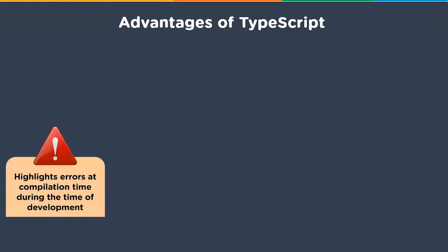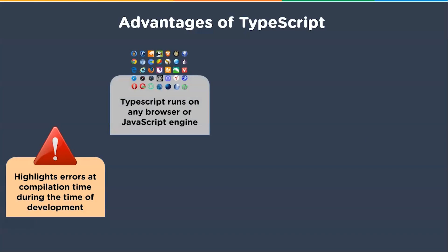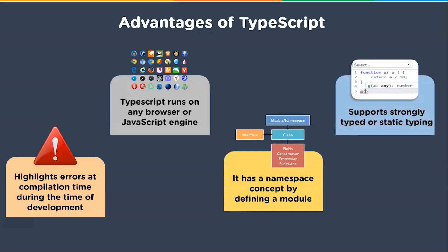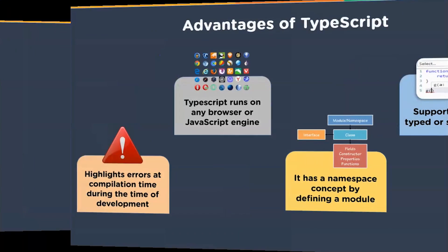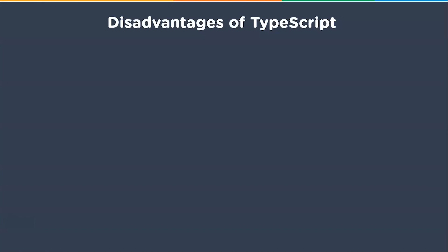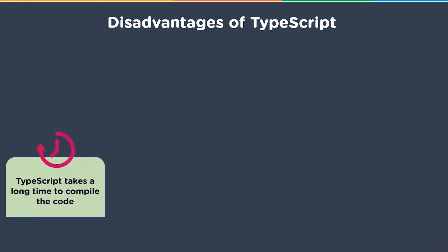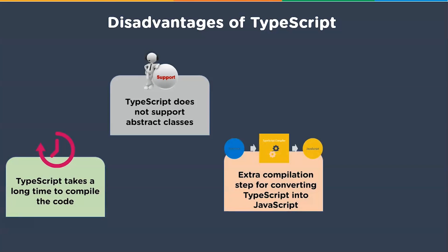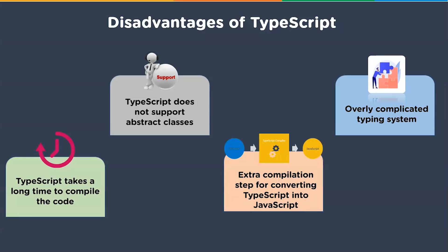Advantages of TypeScript: it highlights errors at compilation time during development, runs on any browser or JavaScript engine, has a namespace concept by defining a module, and supports strongly typed or static typing. Disadvantages of TypeScript: it takes a long time to compile the code, does not support abstract classes, has an extra compilation step for converting TypeScript into JavaScript, and has an overly complicated typing system.